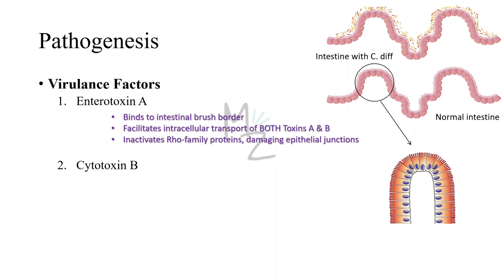Antibiotics disturb and damage the normal human flora, which leads to C. difficile overgrowth. They suppress drug-sensitive members of the normal colon flora, allowing C. difficile to multiply and produce large amounts of enterotoxin A and cytotoxin B.